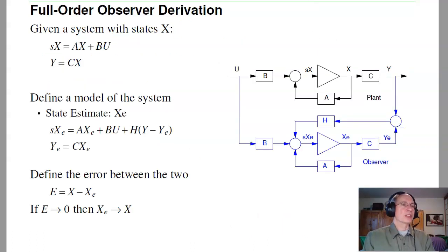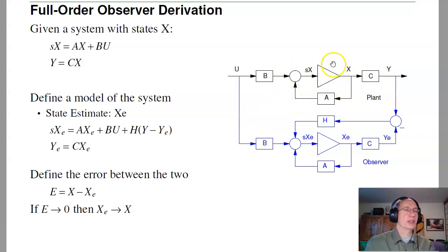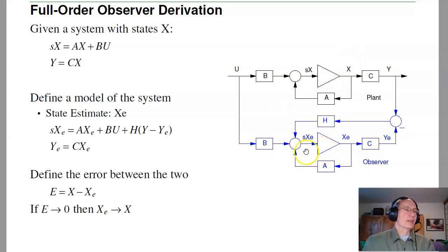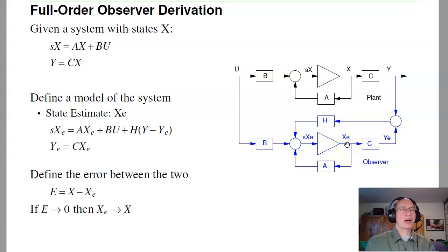A full-order observer looks like the following. I've got the dynamics of the plant: x-dot equals Ax plus Bu, y equals Cx, assuming the D matrix is zero, which is usually the case. I'm going to copy that — I'll have a model that's exactly the same as the plant with the same input, same ABC matrices, same output. Ideally, if I have the same system and same input, I should have the same states.